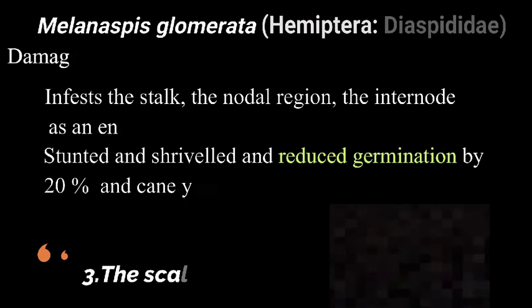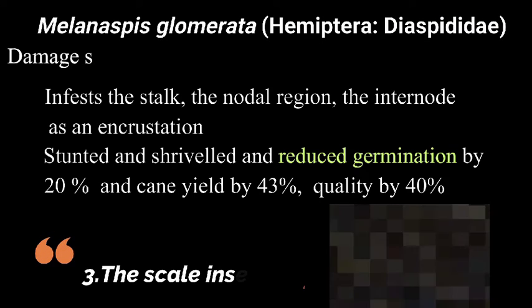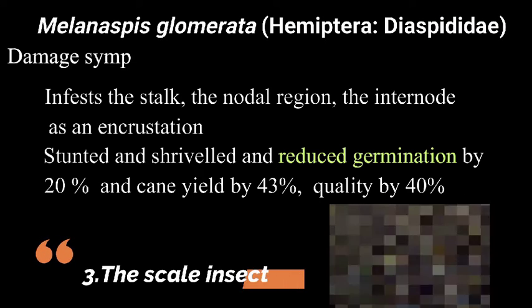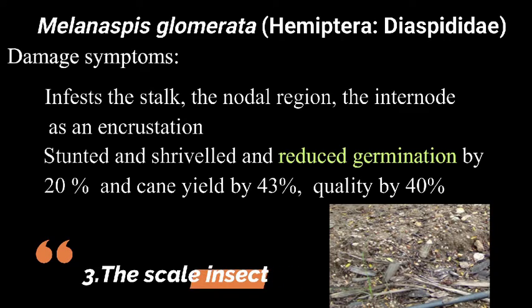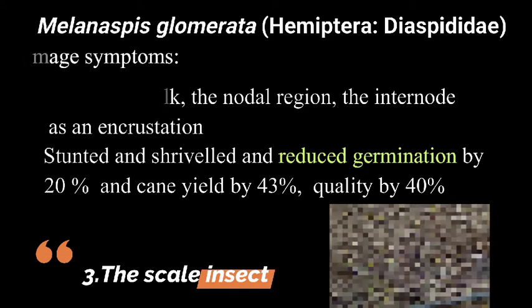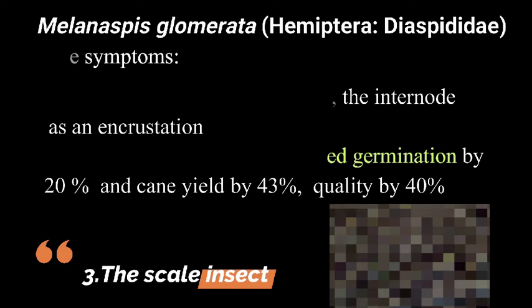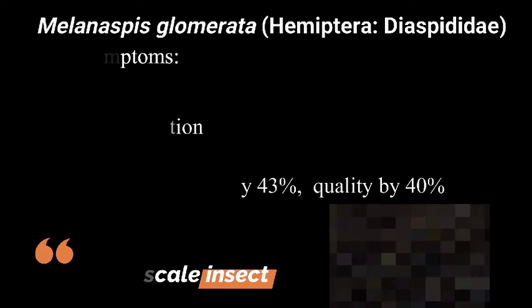Scale insect: Melanaspis glomerata, which belongs to the family Diaspididae and comes under the order Hemiptera. Damage symptoms: the scale insect infests the stalk, mainly the nodal region and later the internodes, as an incrustation. The infested canes remain stunted and shriveled. The infestation reduces germination by about 20 percentage, inhibits cane growth by about 6 percentage, reduces cane yield by 43 percentage, and quality is reduced by about 40 percentage.